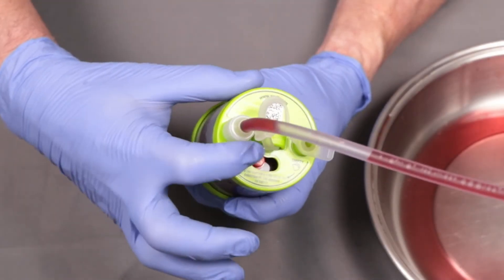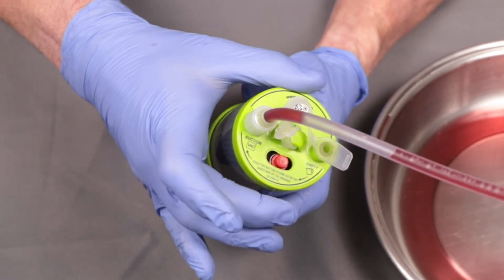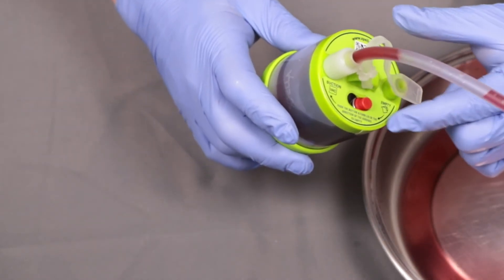When the reservoir needs emptying, hold the red button down and twist the lid to the opposite side. The button will move to the empty position.